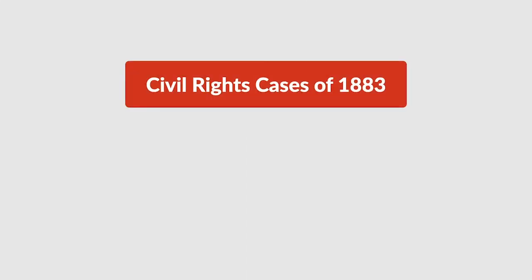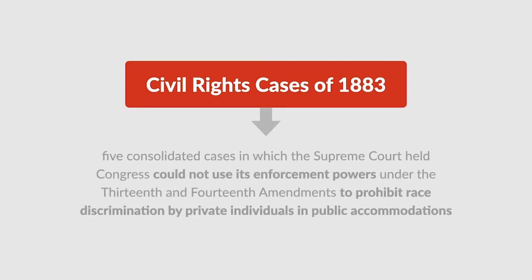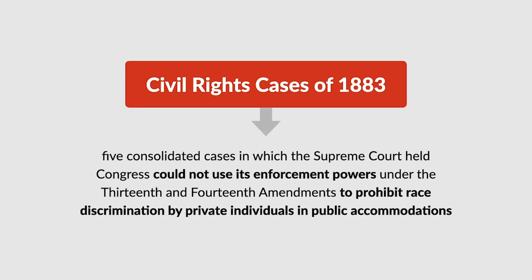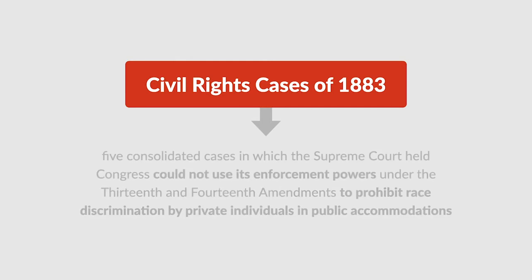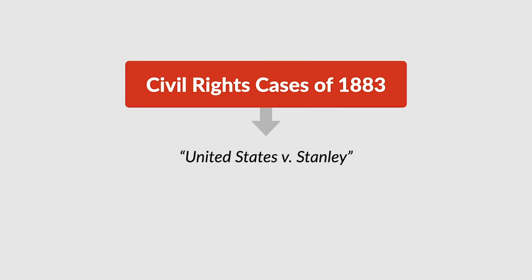The Civil Rights Cases of 1883 were five consolidated cases in which the United States Supreme Court held that Congress could not use its enforcement powers under the 13th and 14th Amendments to the United States Constitution to prohibit race discrimination by private individuals in public accommodations. The cases are sometimes cited as United States v. Stanley, after one of the cases involved.